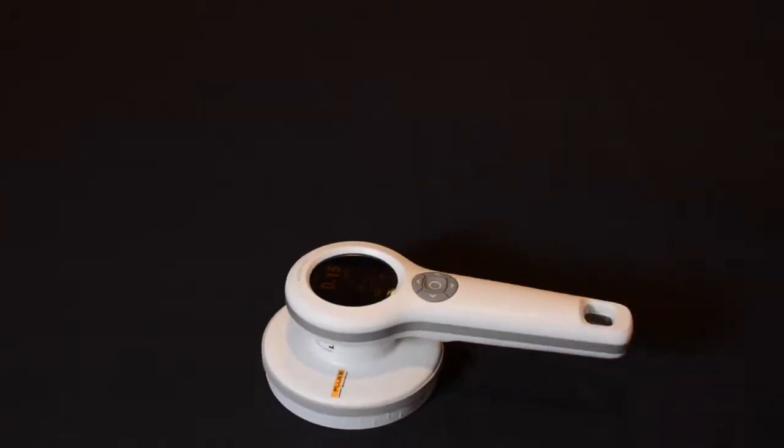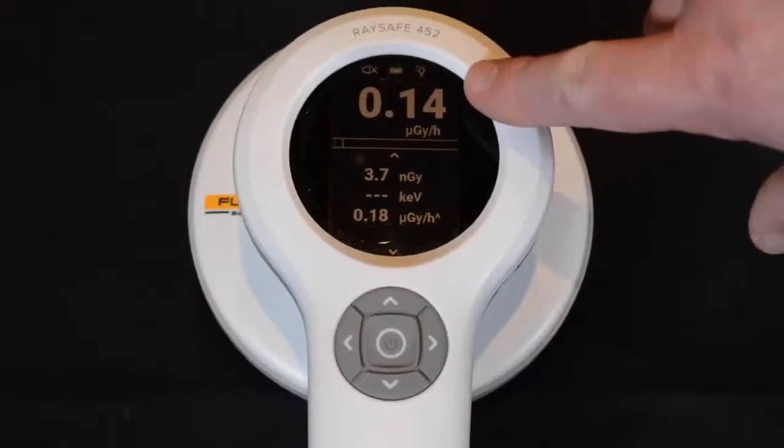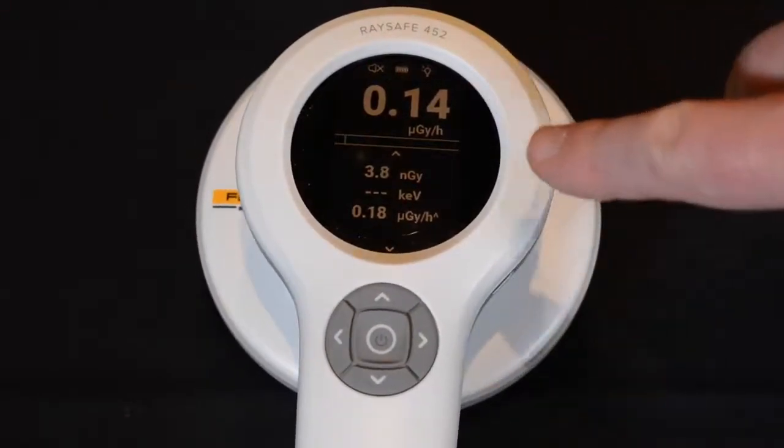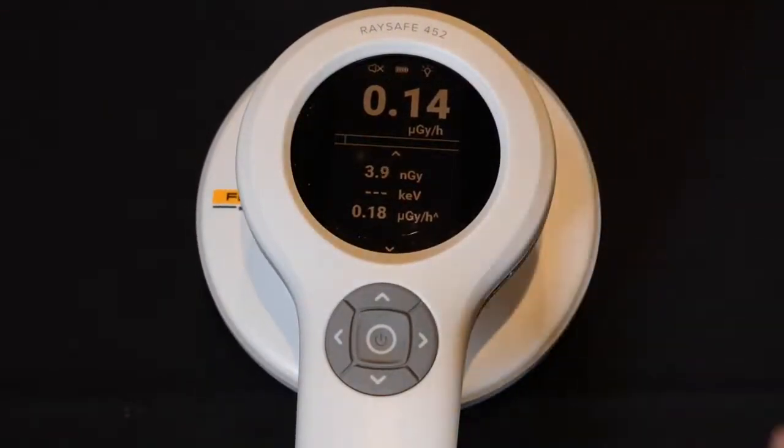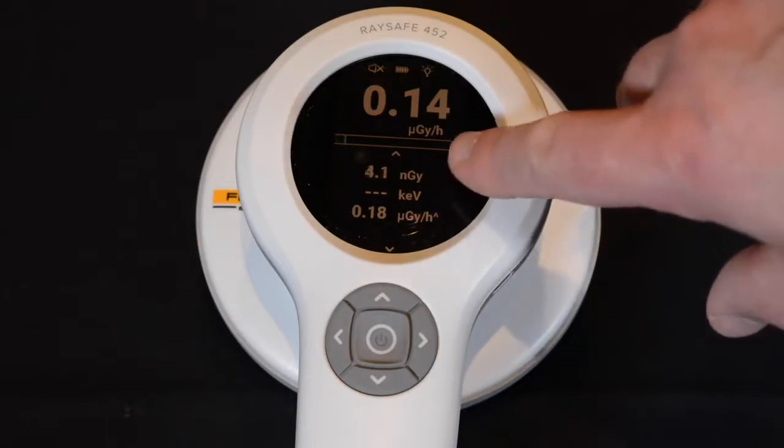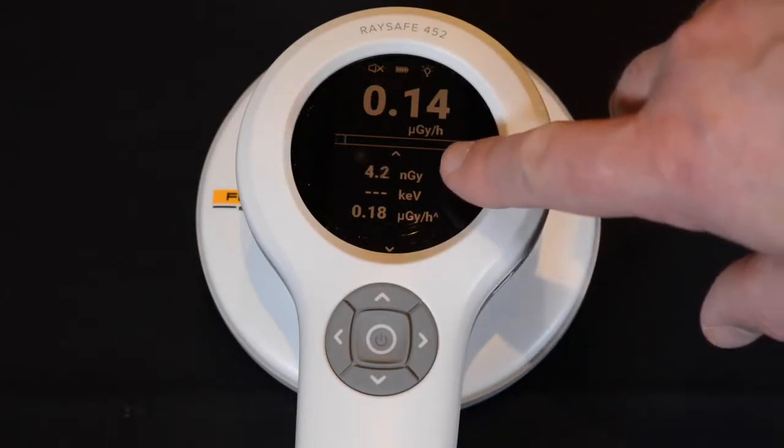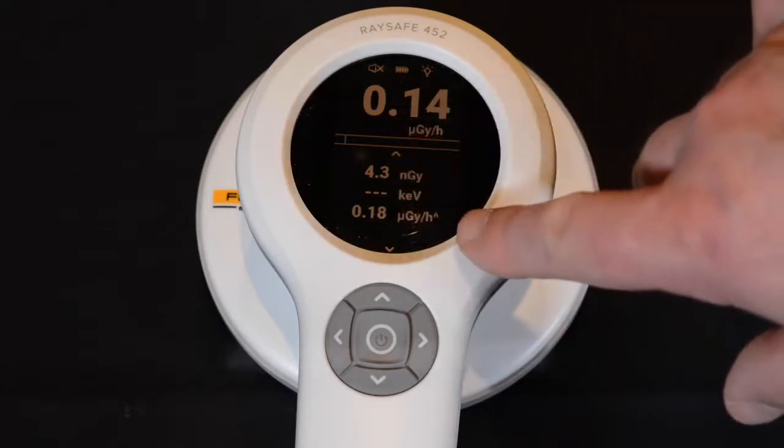The first row always shows the live intensity. Next is the integrated dose for the measurement. If intensity is high enough, you also get the live mean energy. At the bottom, you have the highest intensity recorded.